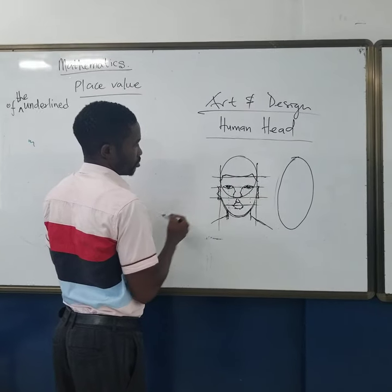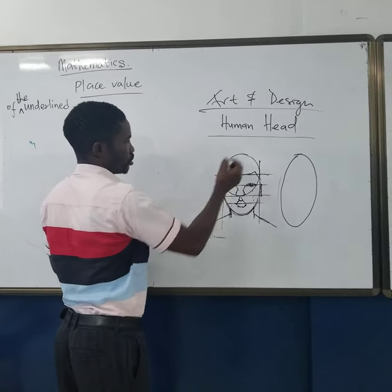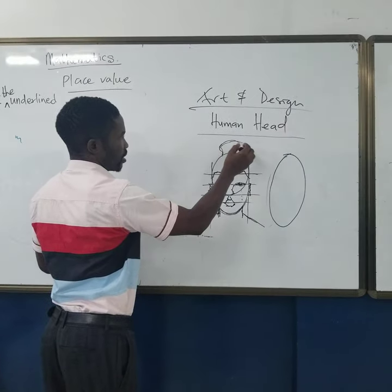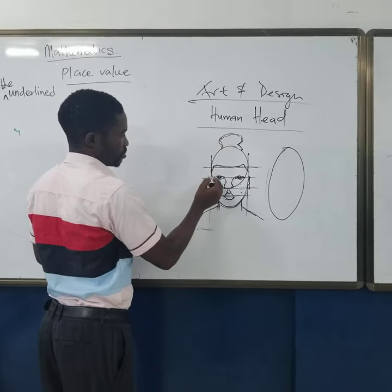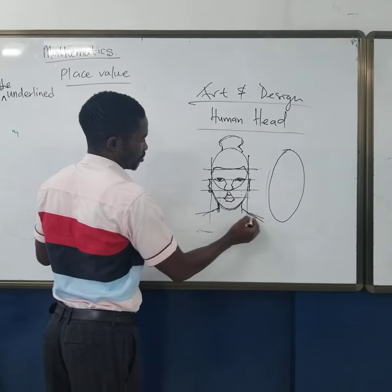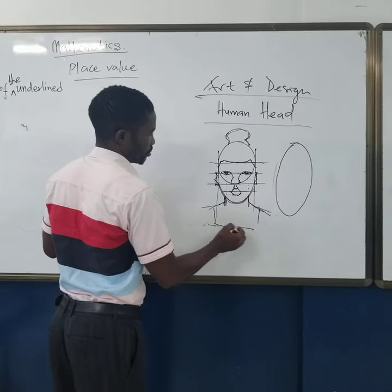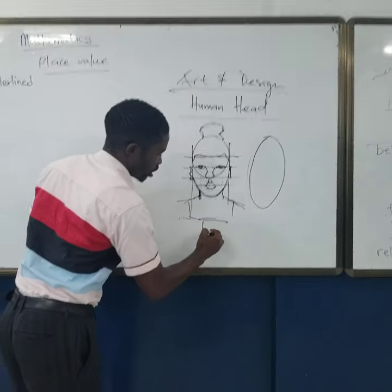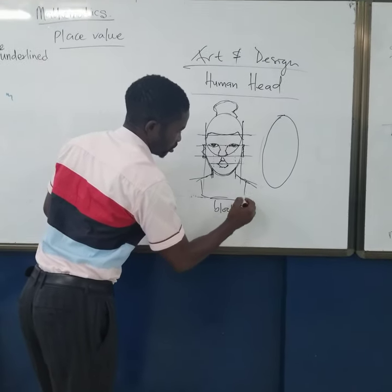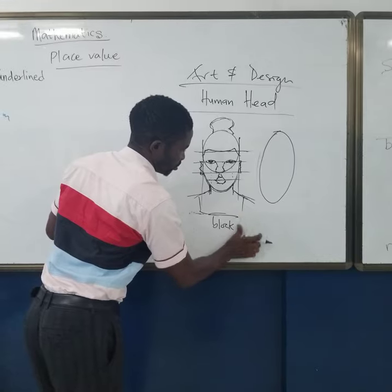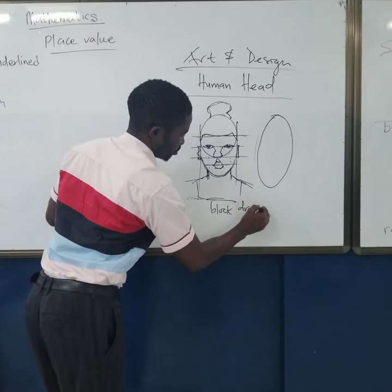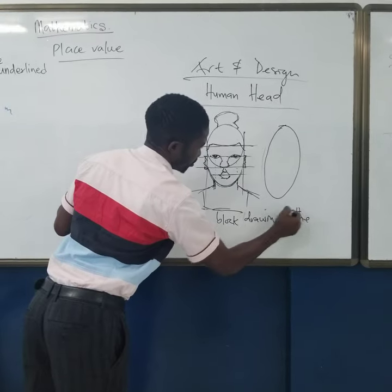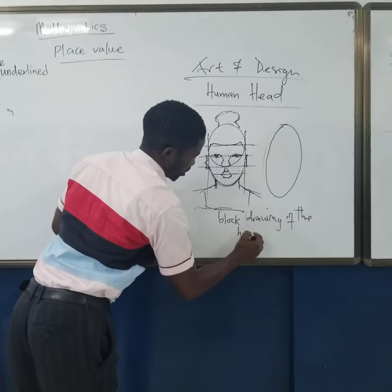Try to draw a female. Try to add some hair on top of it. So this is a drawing — a basic drawing — of the human hair.